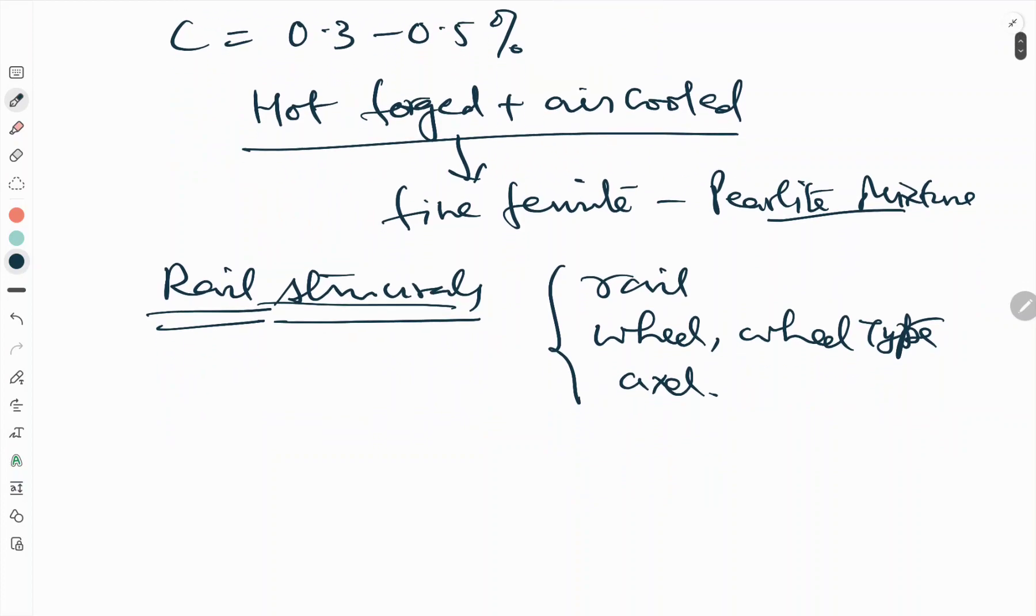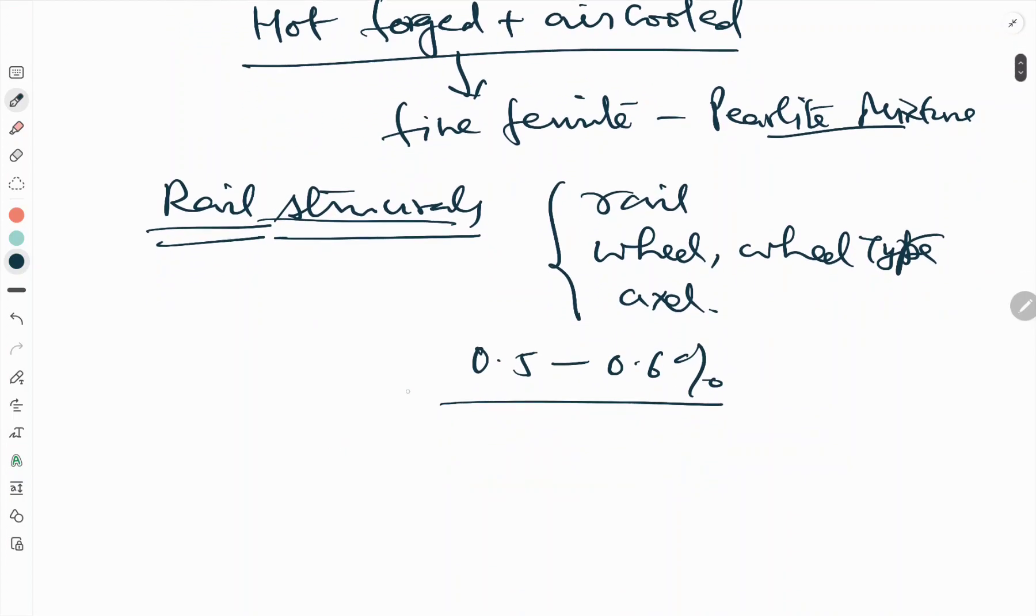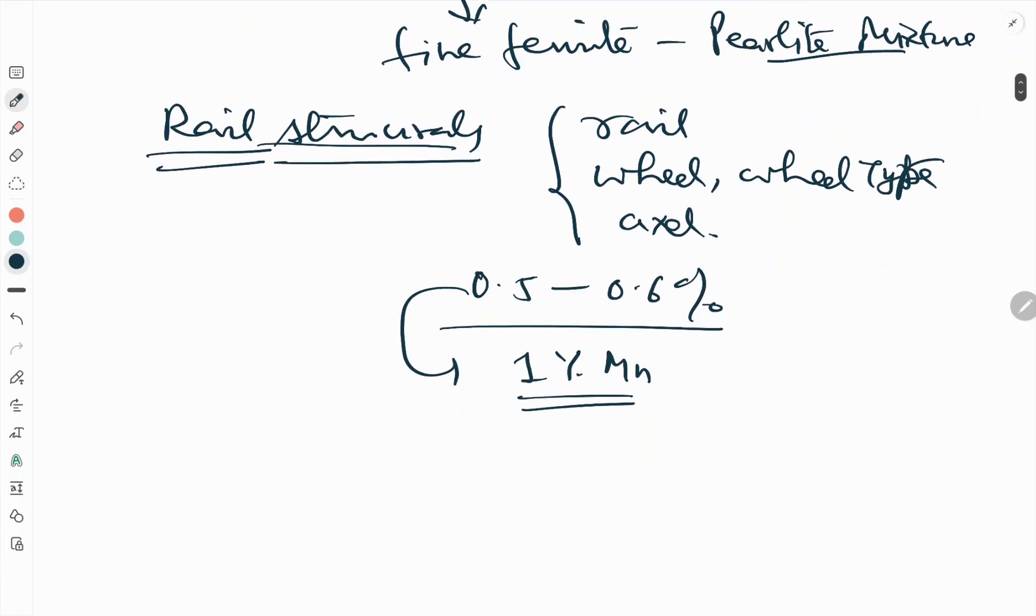These are either forged or hot rolled and have a carbon content around 0.5 to 0.6 percentage. The higher level of carbon combined with about 1% of Mn leads the eutectoid composition sufficiently to yield a mostly pearlite structure.